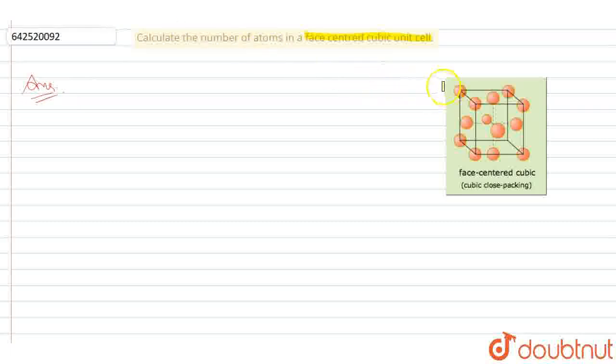Here is the 3D diagram of the FCC unit cell. Now we will understand with the help of this diagram. You can clearly see there are 8 atoms at 8 corners.